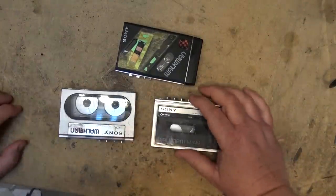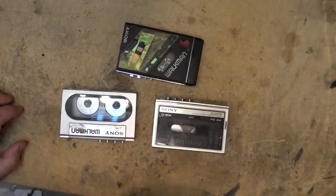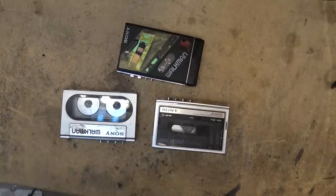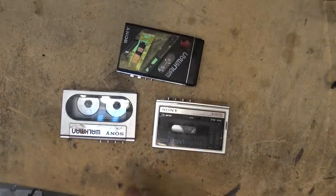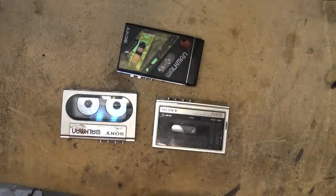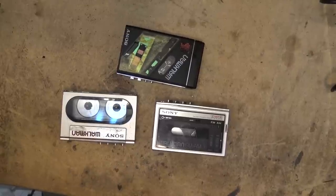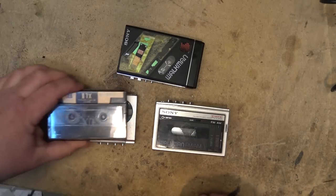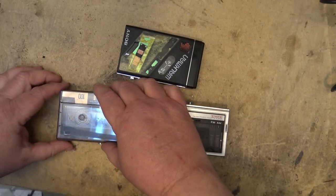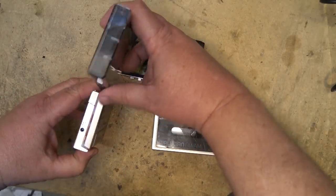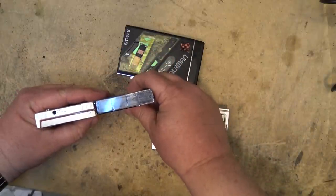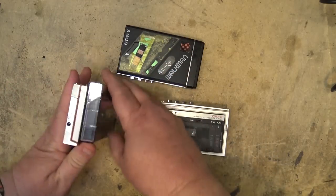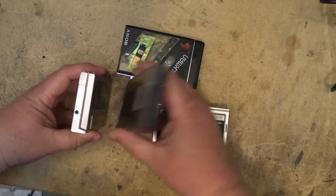I thought it might be kind of fun to look at three of the smallest Sony Walkmans ever made. Here we have the Walkman WM-10. This was a breakthrough Walkman, as it's exactly the same size as a cassette tape. It's the same width as a cassette tape in its case.